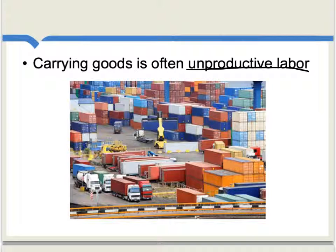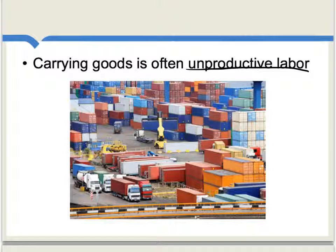Still, the modern economist probably is not convinced here. In any case, Smith closes this chapter and indeed all of Book 2 with a pretty potent claim. He argues that Europe is sending too much of its capital abroad, engaging it in trade and the transportation of goods, and not investing enough capital in its own agriculture. He then states that the next two books of The Wealth of Nations will be devoted to figuring out which policies have led to these mistakes. This will form an important part of Smith's coming critique of mercantilism.